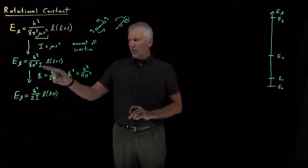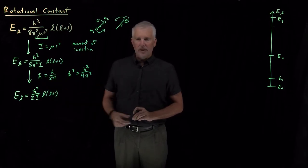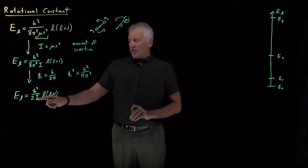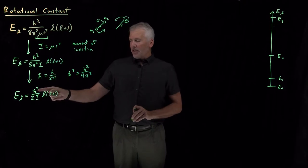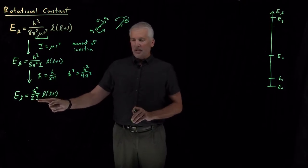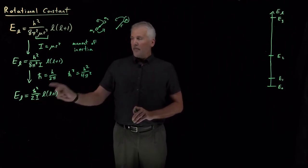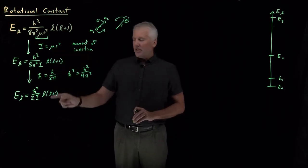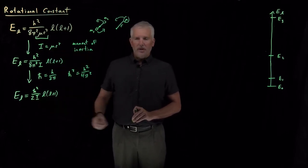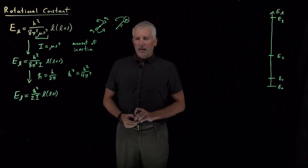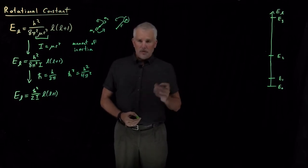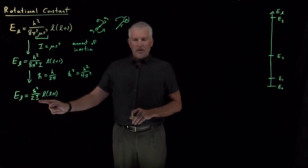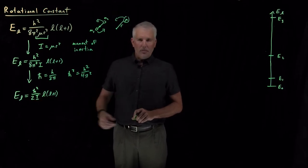I'll continue mostly writing it with h, but you'll often see it in the h-bar form. A lot of people like this expression because h-bar squared divided by twice a quantity that behaves a little bit like a mass is very similar to the form that energies take in other systems — like the particle in a box — that have h-bar squared divided by twice something that feels like a mass.